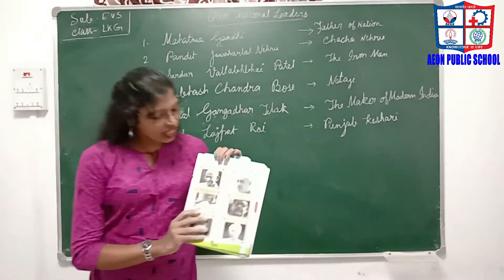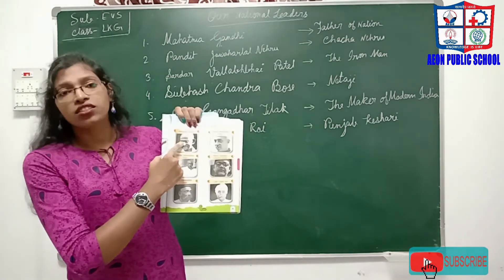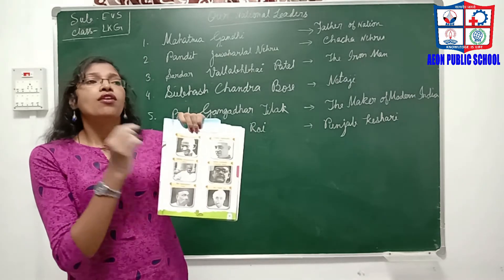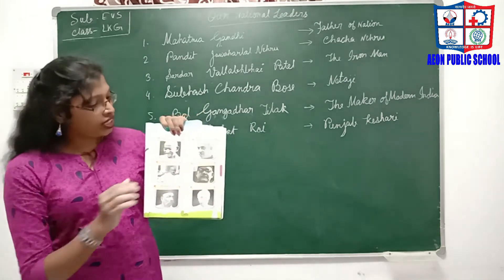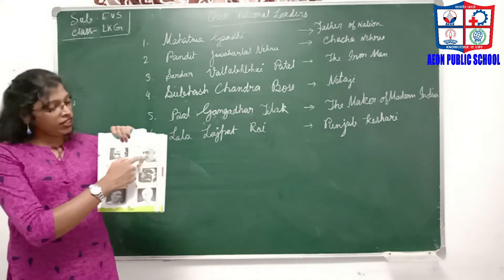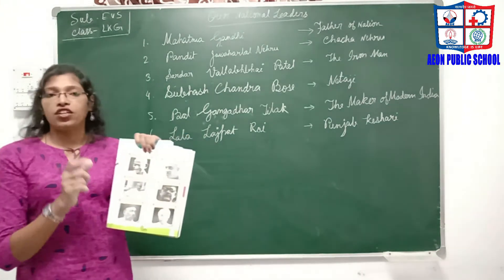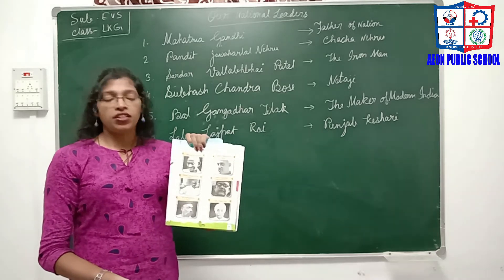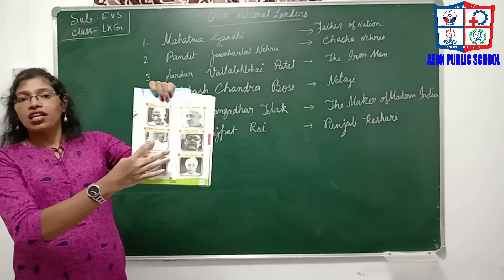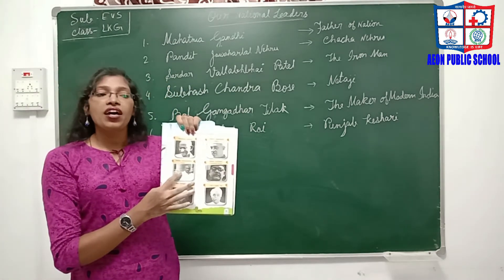Let's see who they are. Look at the pictures. This is Mahatma Gandhi. He is known as Bapu. He is also known as the Father of the Nation. Then this is the picture of Pandit Jawaharlal Nehru. He is also known as Chacha Nehru because he was fond of children. This is the picture of Sardar Vallabhbhai Patel, known as the Iron Man.